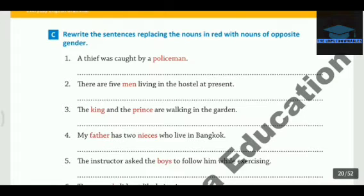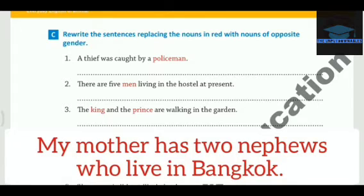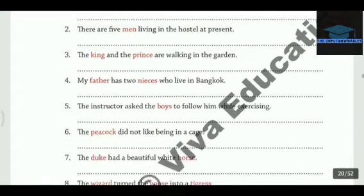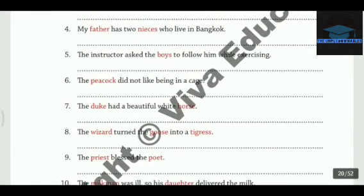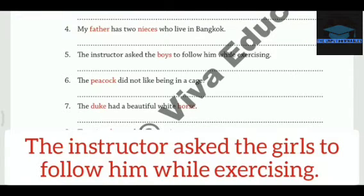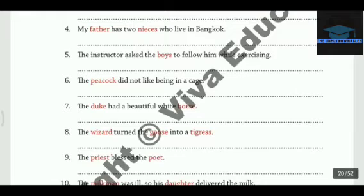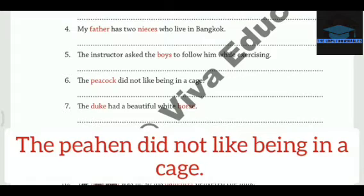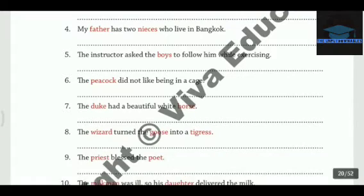The next sentence also has two red words. Let's change them: My mother has two nephews who live in Bangkok. Number five has only one word in red and it's very easy. The instructor asked the girls to follow him while exercising — the answer was Girls. Next is also very easy: The peahen did not like being in a cage. So Peacock becomes Peahen.